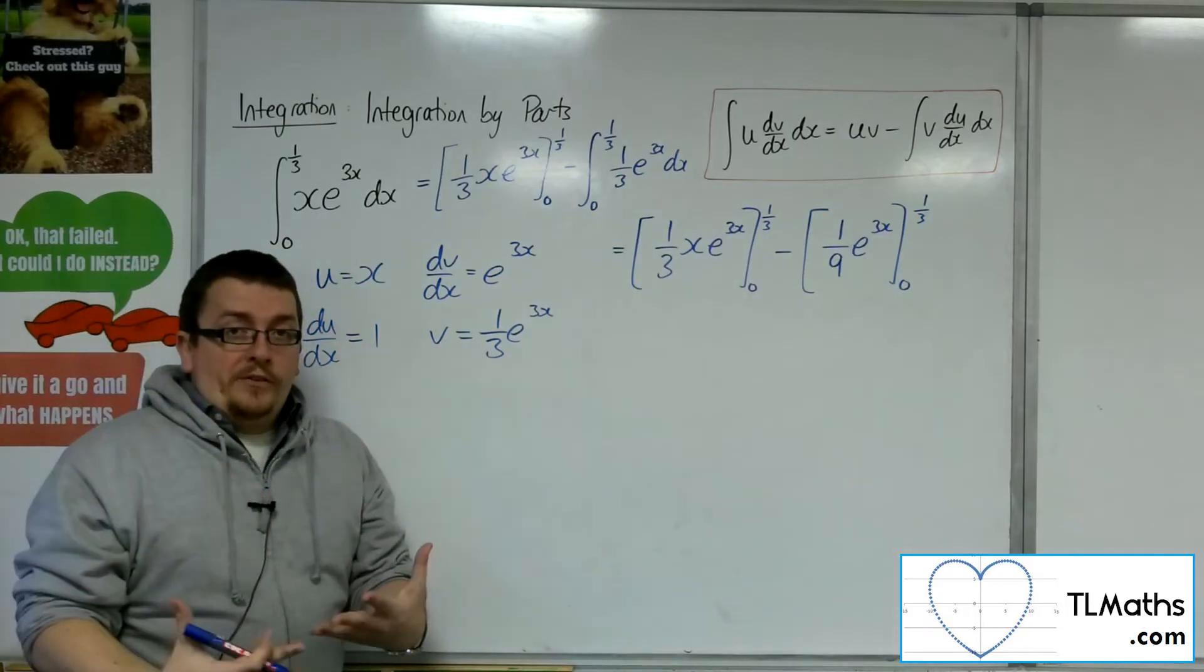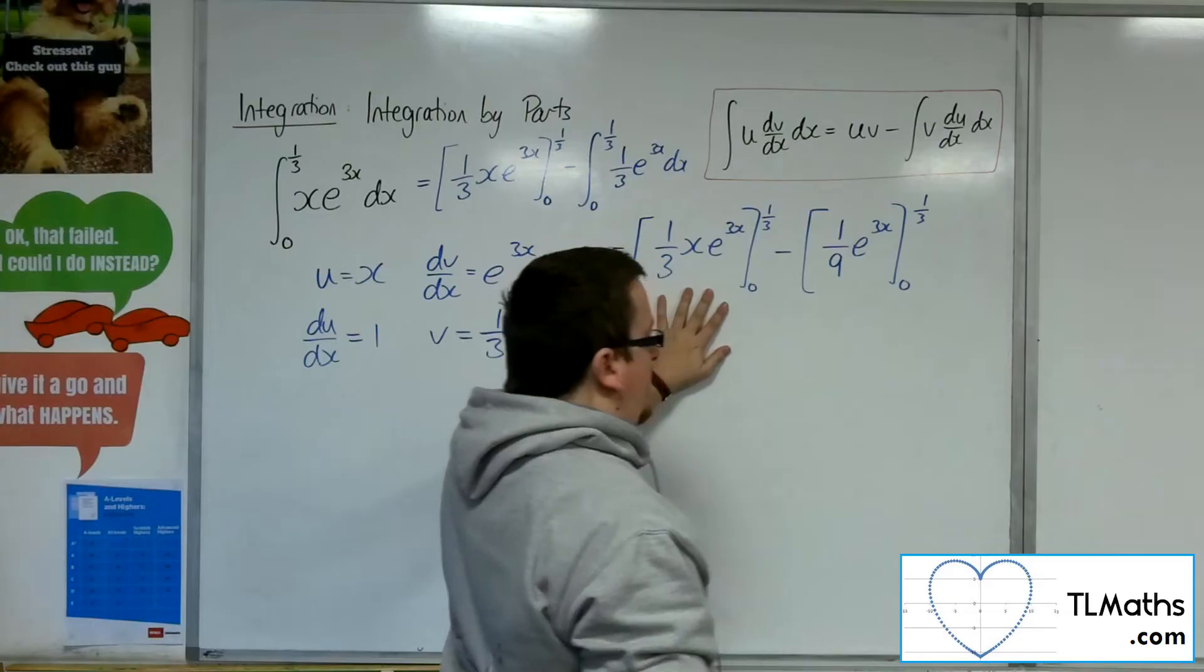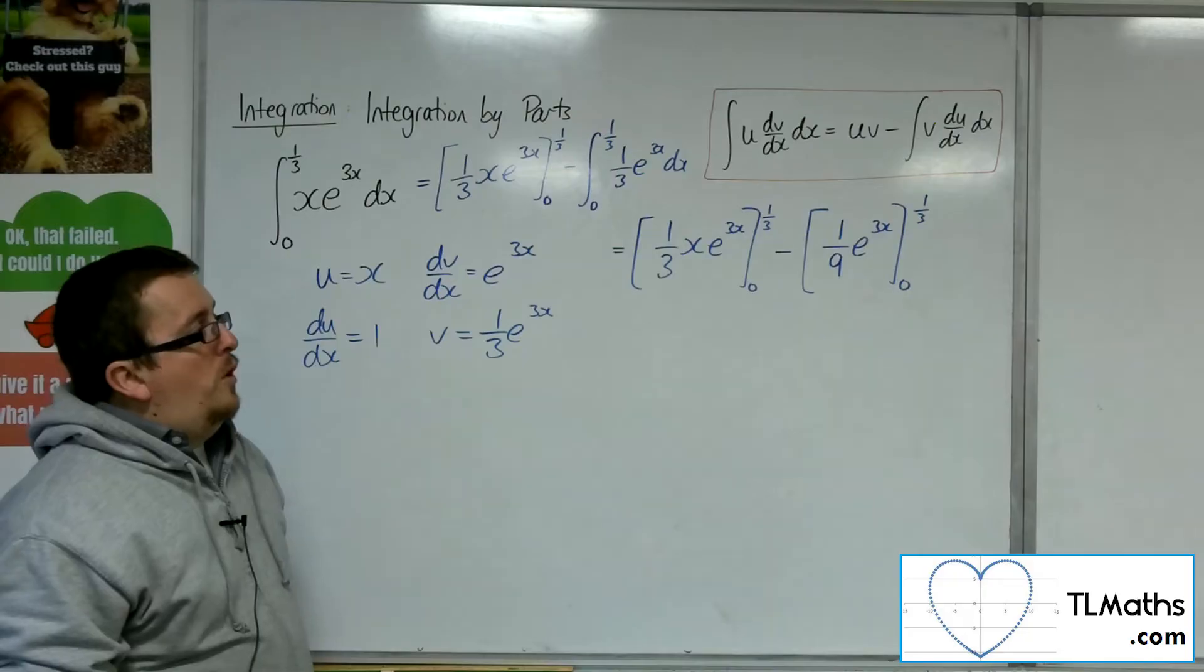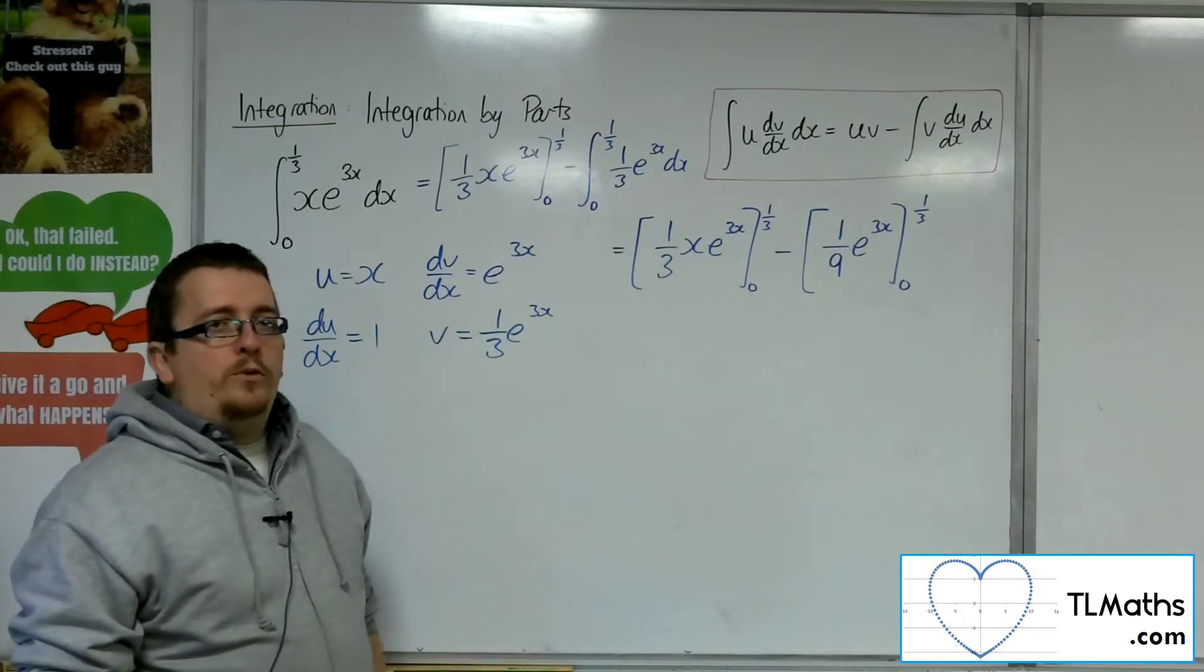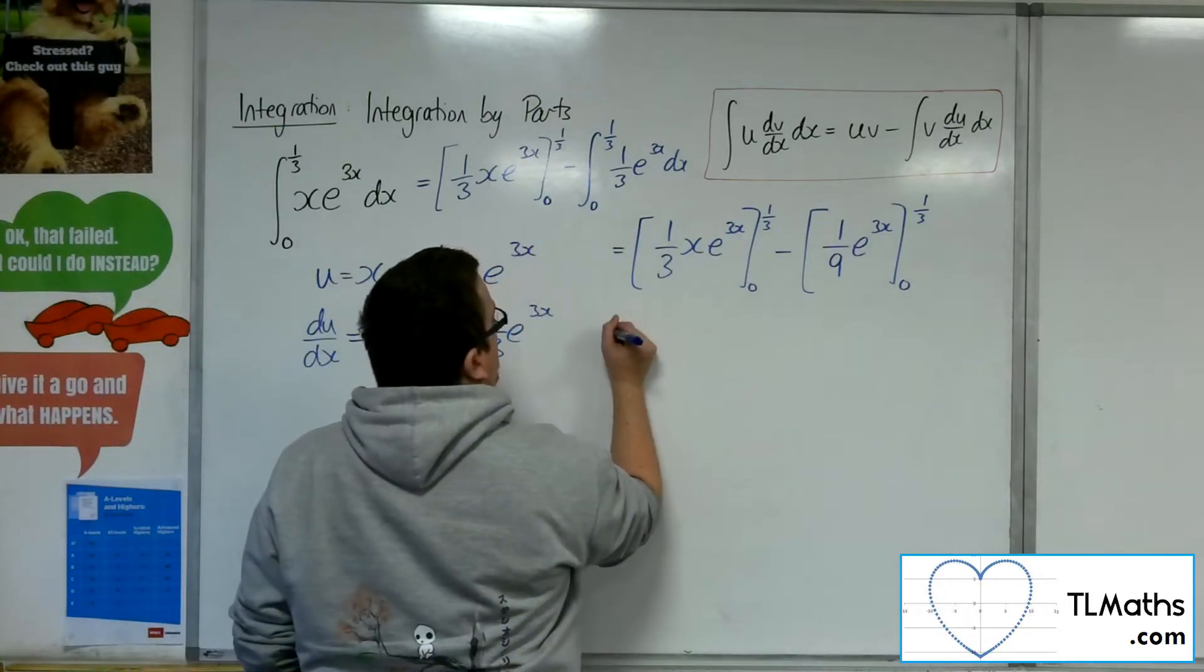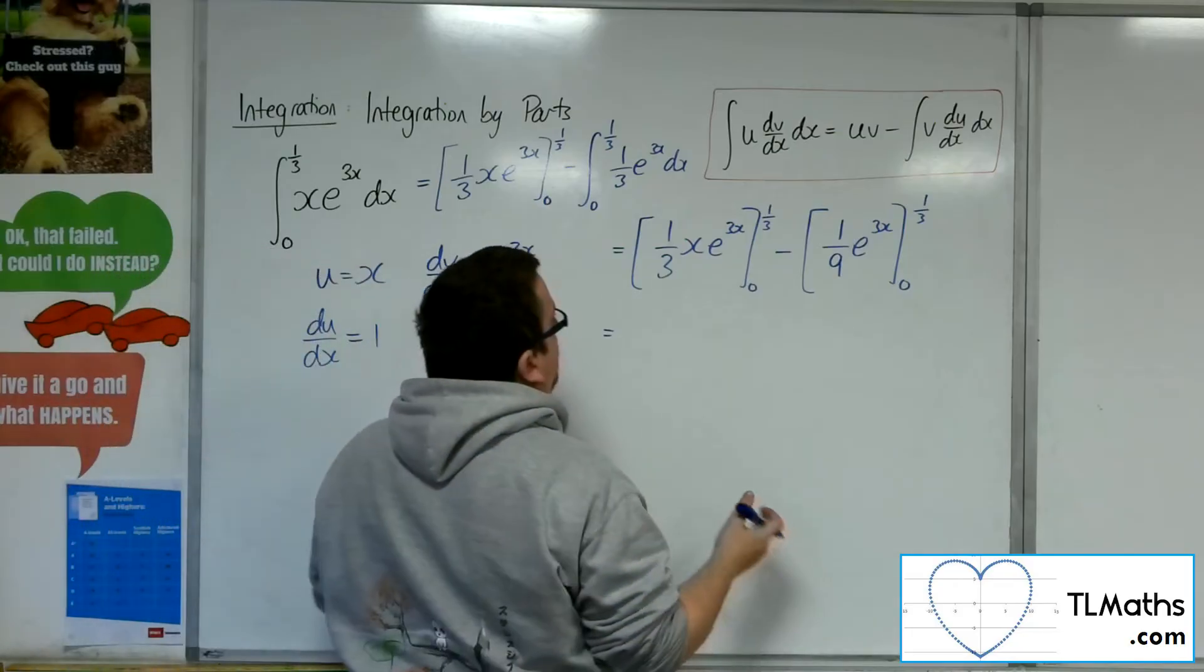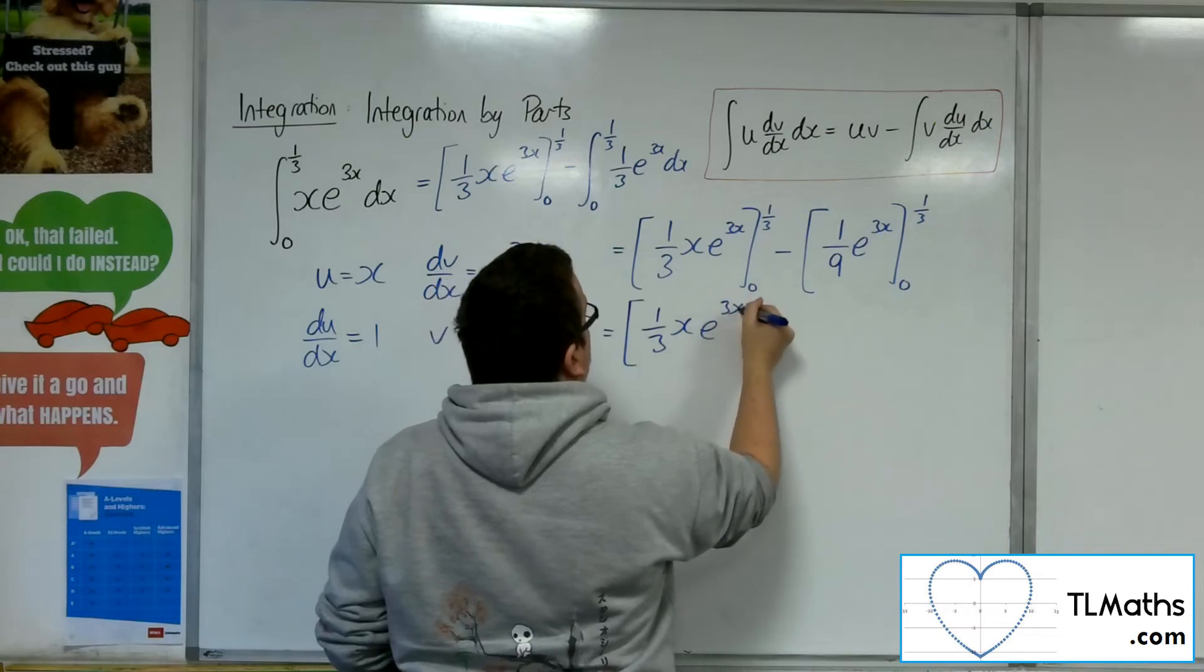Now at this stage, I could do substituting 1/3, substituting 0, substituting 1/3, substituting 0, like that. The problem is that you can get quite messy with all the brackets. So what you can do, which you may not have seen before, is that actually you can evaluate both of these things at precisely the same time.